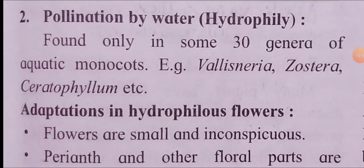Next, we study pollination by water — the second abiotic agent. Water-mediated pollination is called hydrophily. It is found only in about 30 genera of aquatic monocots. Examples include Vallisneria, Zostera, and Ceratophyllum. Mostly aquatic plants show this type of hydrophily-type pollination.